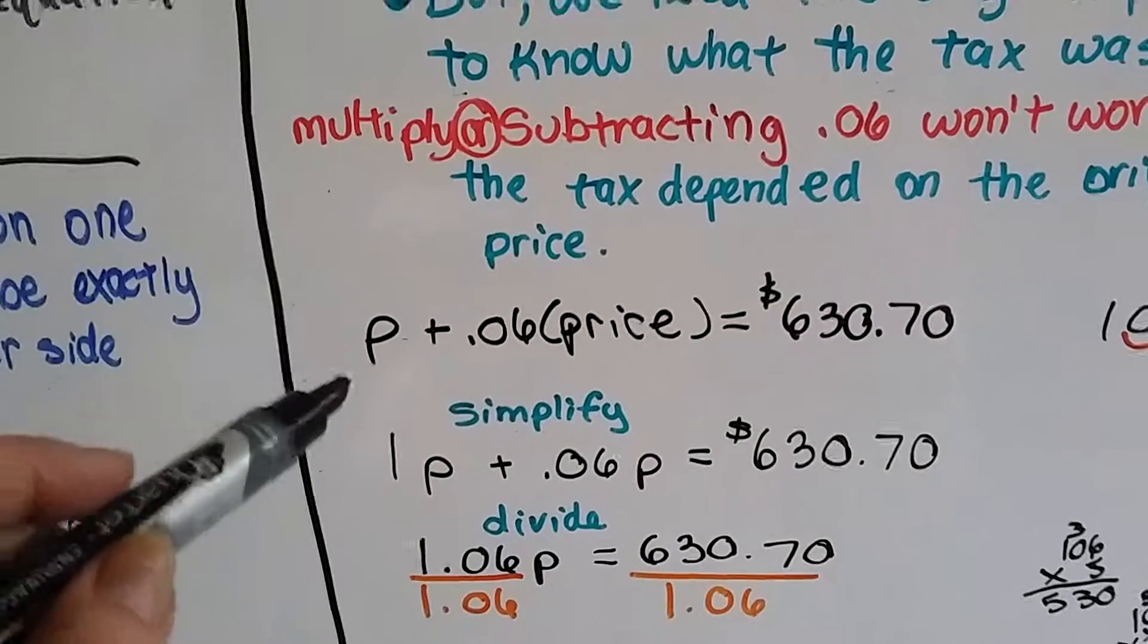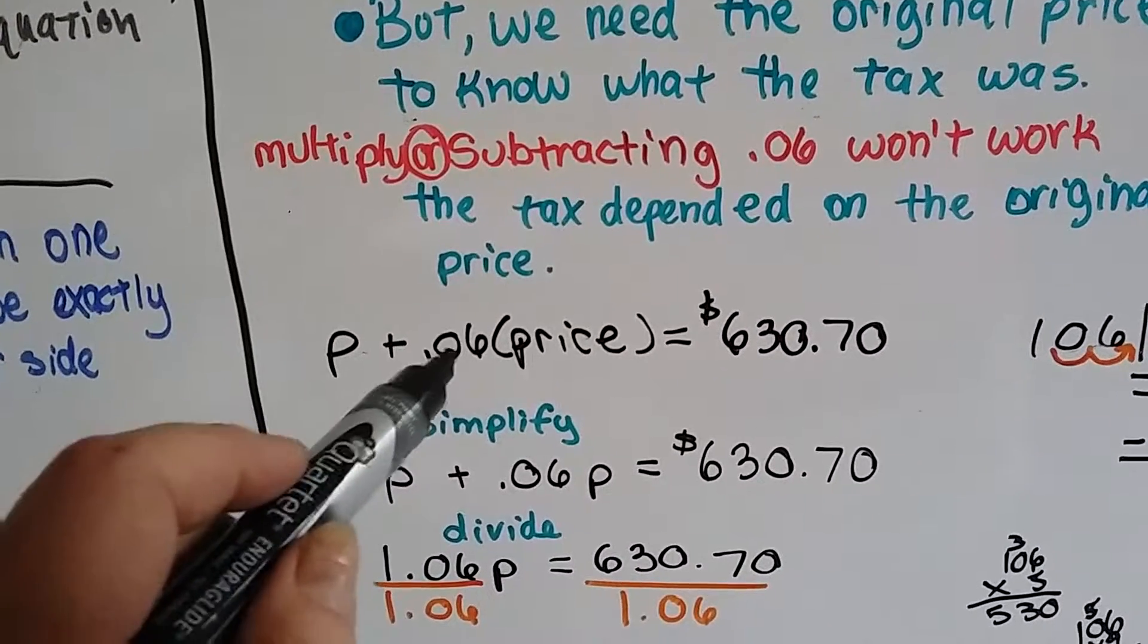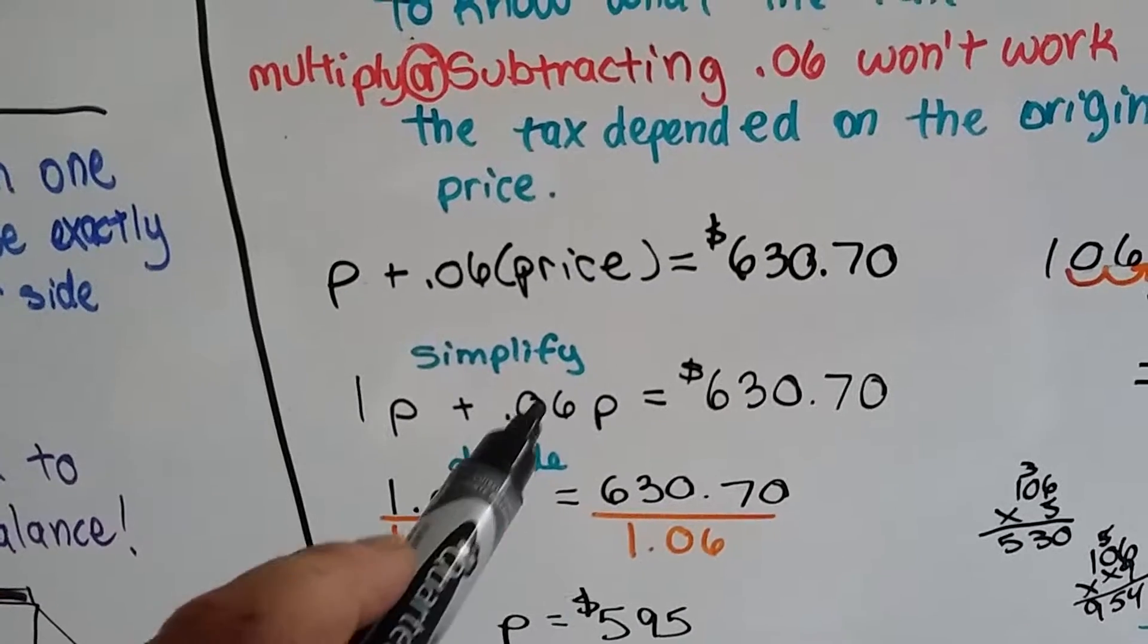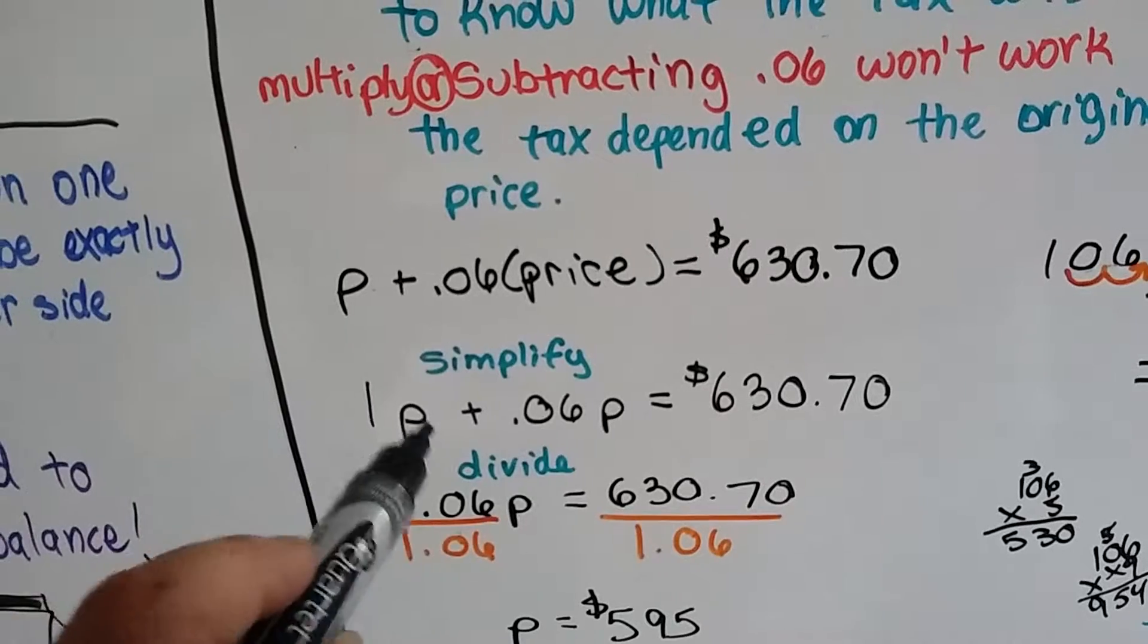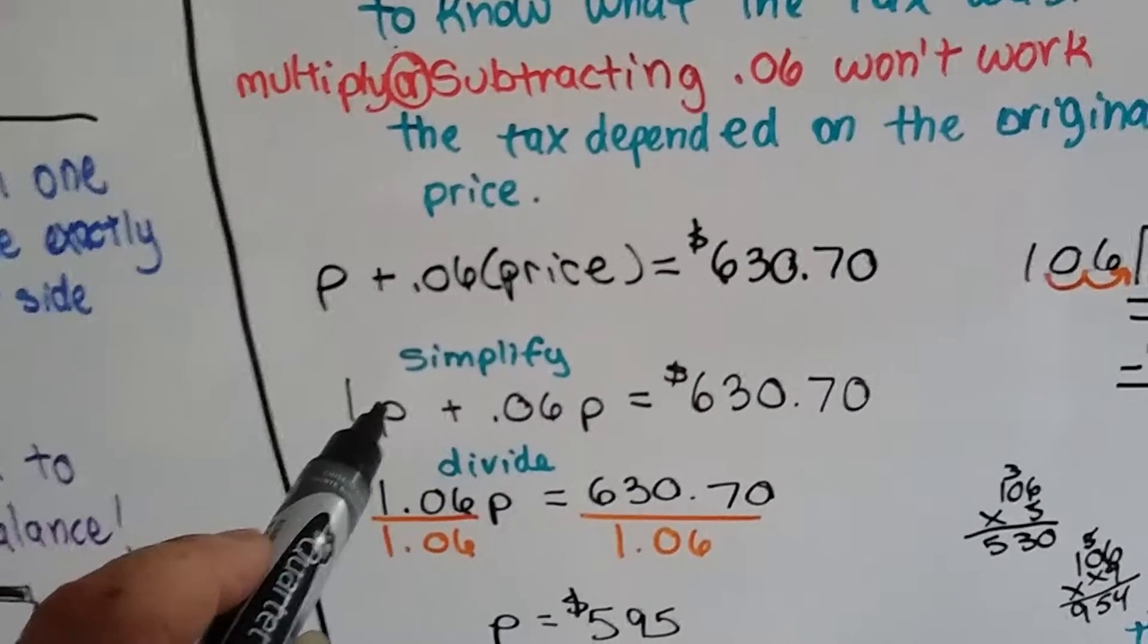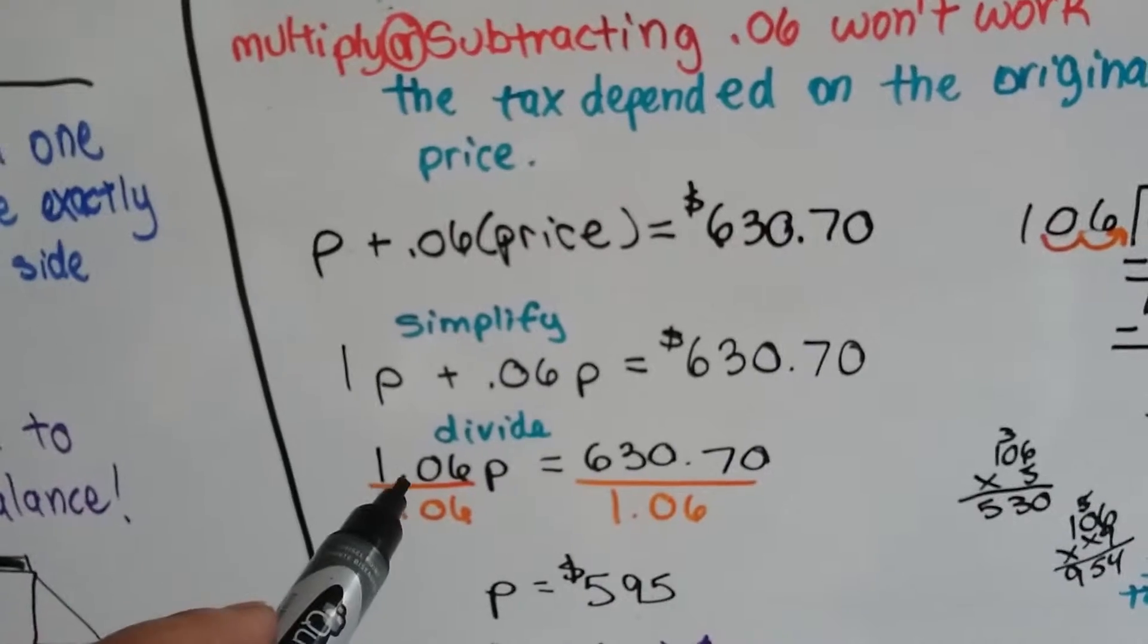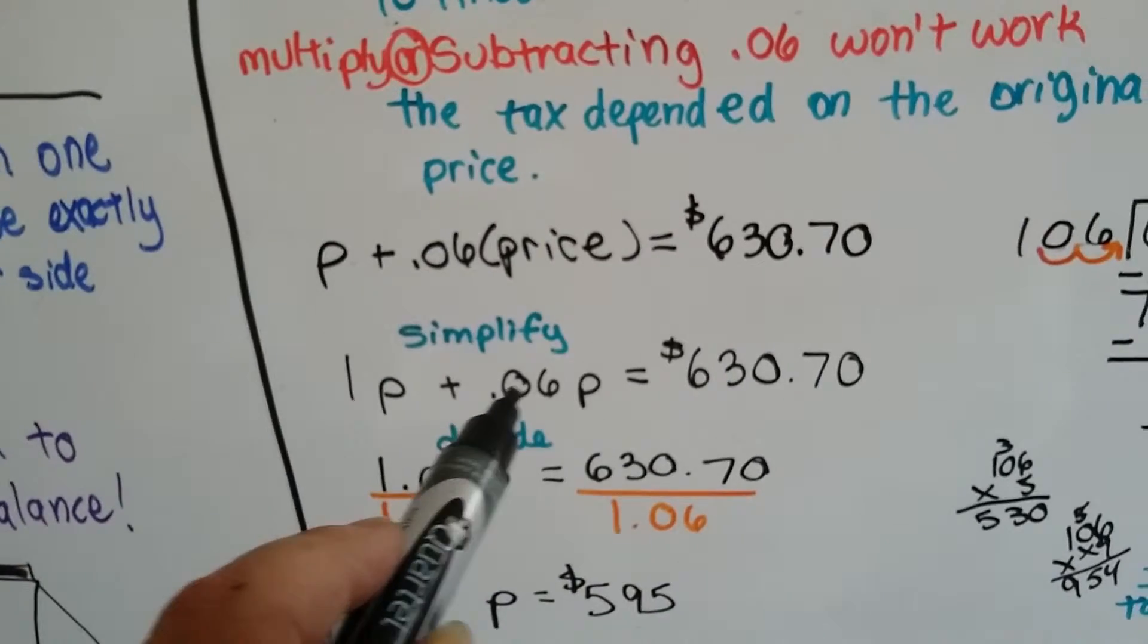So we have to simplify this. We've got P plus our sales tax percentage of .06 and we need to multiply that by the price, P. So that gives us 1P plus .06P. Because remember, there's a 1 in front of all of the variables that are standing alone, we just don't write them. So now we've got 1P plus .06 times P. To simplify that, that gives us 1.06P. We have to add the 1 to the .06.